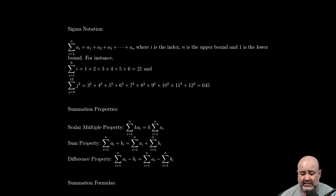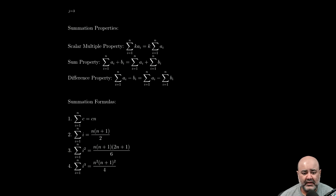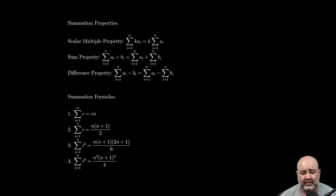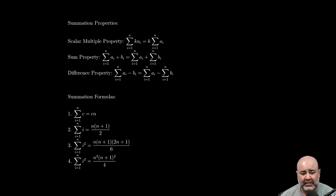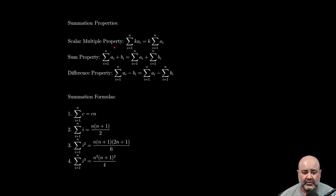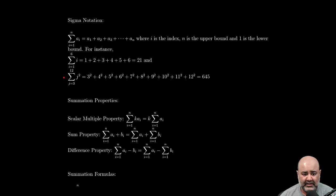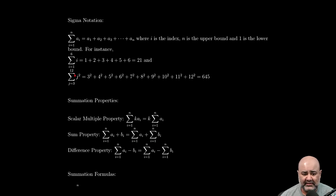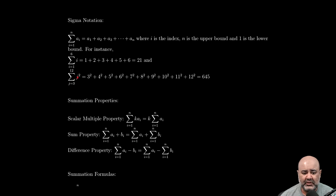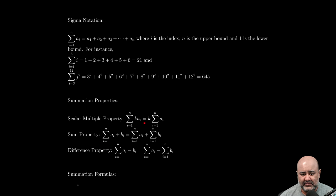There are properties of summation from pre-calc. The scalar multiple property means if there's a constant being multiplied by some formula, like 5j², you can take the 5 and push it out of the summation. Just like with limits and derivatives, the constant multiple rule says take the constant outside, do what you need with the expression, then multiply the constant back in.